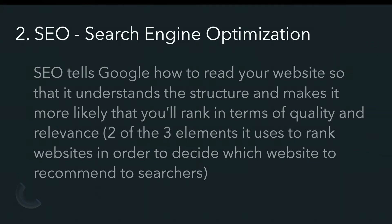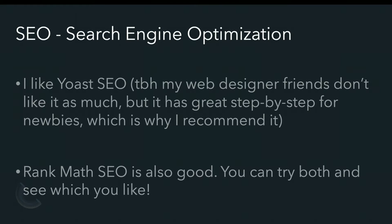The next type of plugin is something for SEO, or search engine optimization. Google doesn't automatically understand how to read your website, so we have to help it. Any type of SEO plugin is going to guide you through the process of giving information to Google so they know what types of search queries to suggest your website for. Personally, I like Yoast SEO — it's probably one of the most popular. I also know web designers who prefer Rank Math SEO, and that's also good, so you can use either.